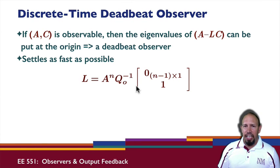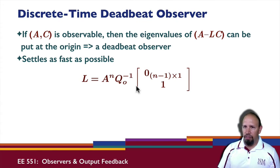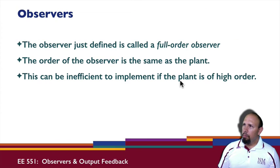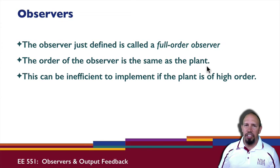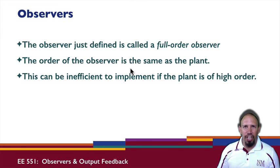In discrete time there is actually a second form for the observer. The form shown is called the a priori observer; there's also an a posteriori observer, but we won't go into that. By way of summary, the observer we've been looking at in both continuous and discrete time is called a full order observer because the order of the observer is the same as the order of the plant, which can be inefficient to implement especially for high-order plants. This used to be a bigger problem when computers had less memory, but it is something to consider. Stay tuned - we're going to talk about a reduced order observer next.